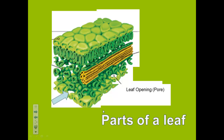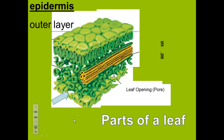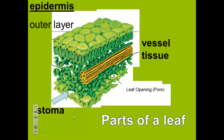Here, you can see a cross-section view of the parts of a leaf. Up at the top is the epidermis, like we talked about in the previous slide. In the middle here is the vessel tissue. This arrow is pointing to the stoma.